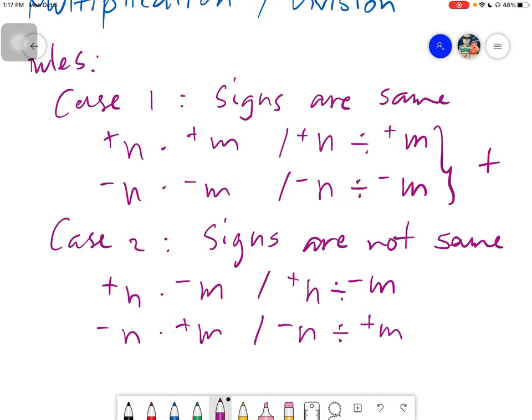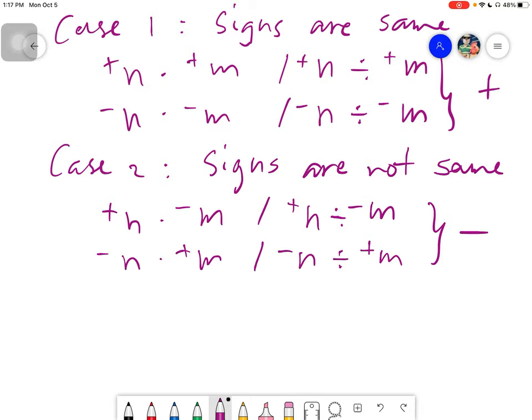So if you will have two numbers, take note two numbers, having opposite signs, may it be multiplication or division, your answer will always be negative.